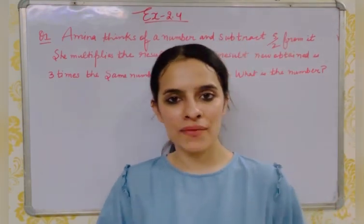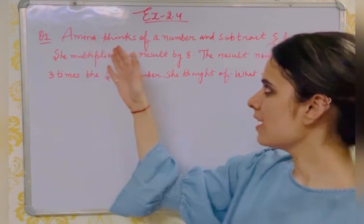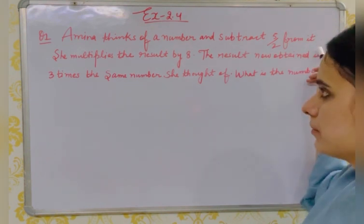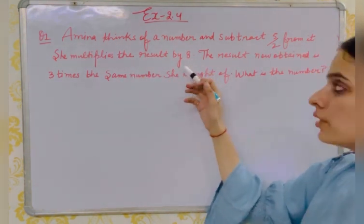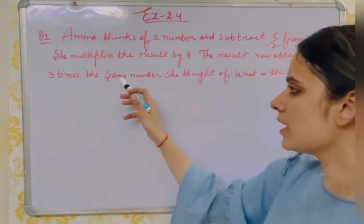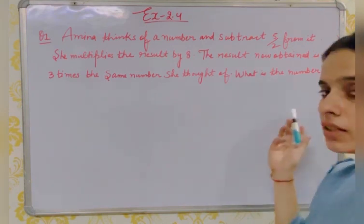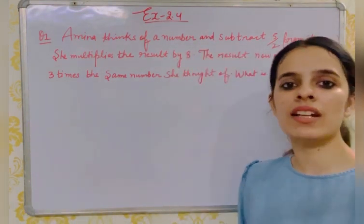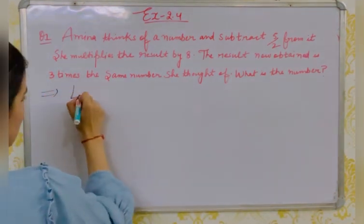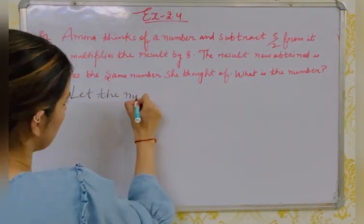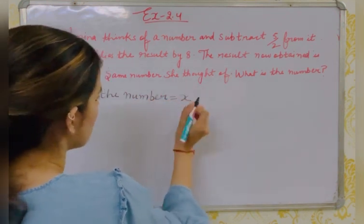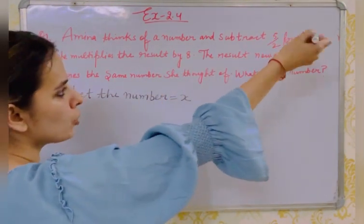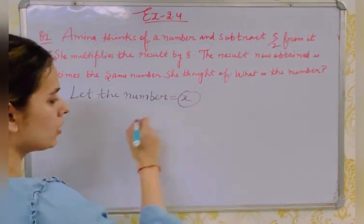Question number one of Exercise 2.4: Amina thinks of a number and subtracts 5/2 from it. She multiplies the result by 8. The result now obtained is 3 times the same number she thought of. What is the number? So whatever is asked, we will take it as x. Let the number be x. She thinks of x and subtracts 5/2 from it.